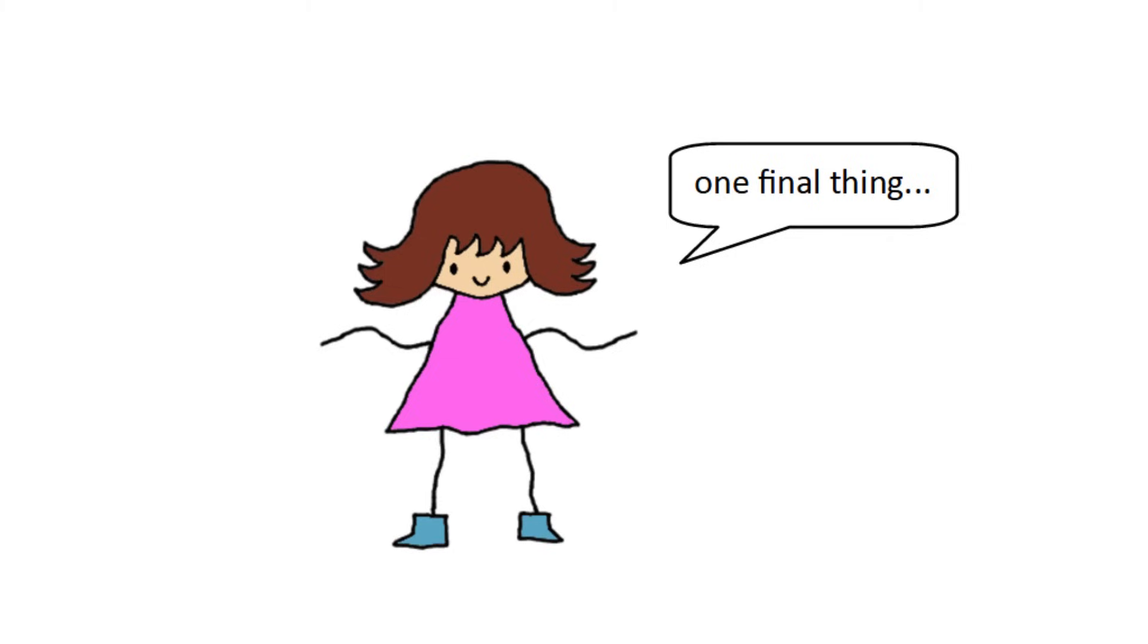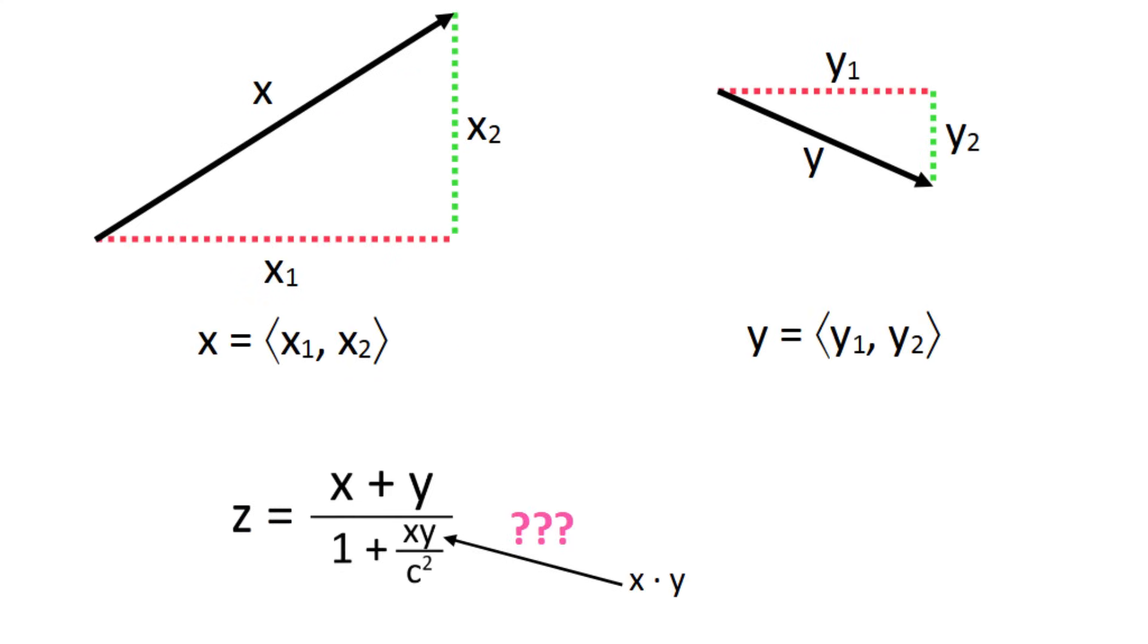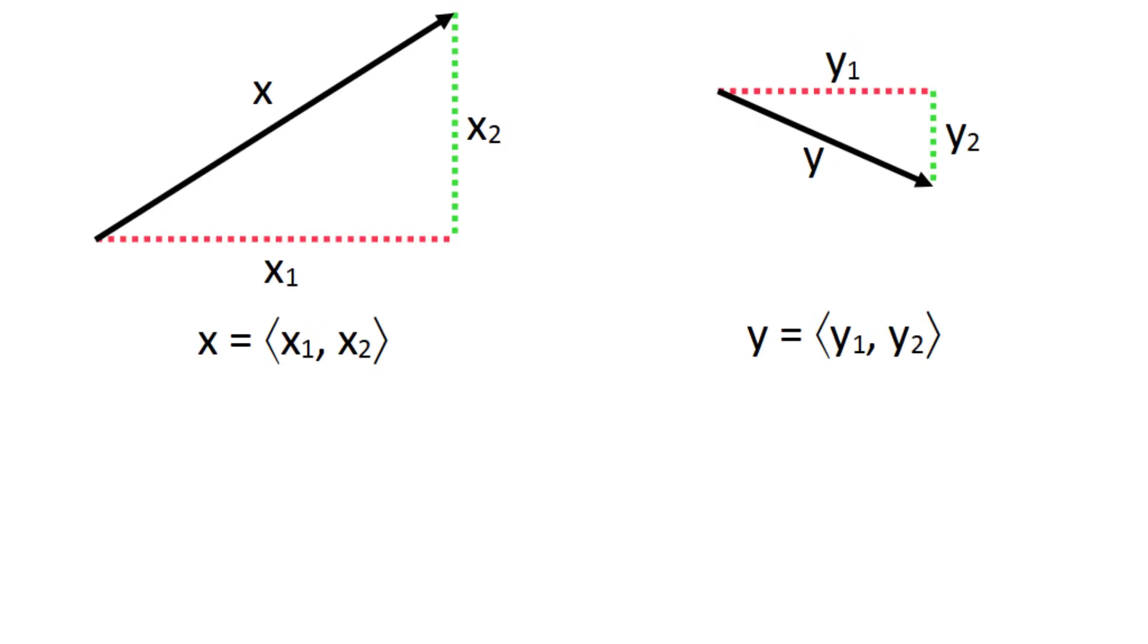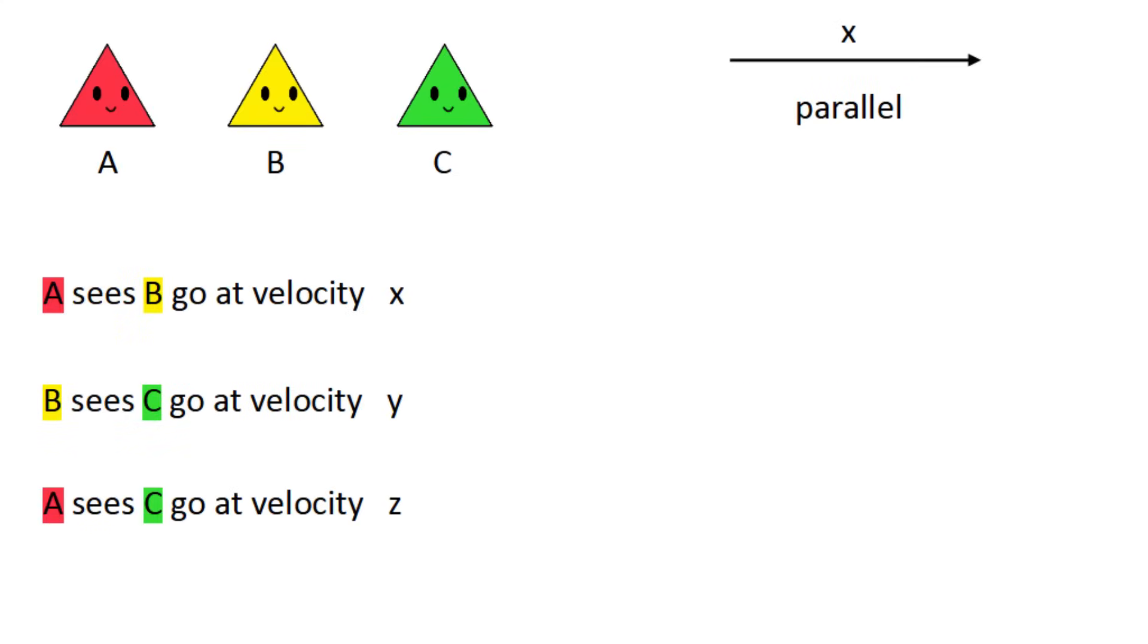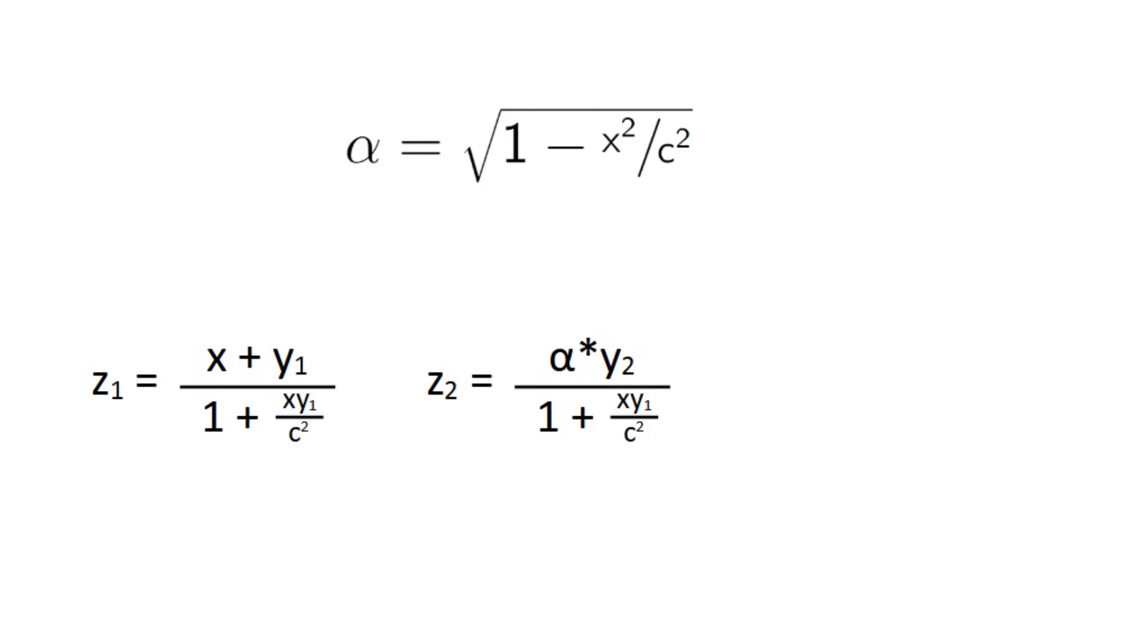And now there's one final thing I want to cover. With multiple spatial dimensions, velocities are represented by vectors with multiple components, and they might not be co-linear. It would be cool if the formula is still held just with vector addition and a dot product, but the actual formula is way more complicated and not even commutative. But there is a simpler form of it that we can use under certain conditions. Basically, you have to set up your coordinates in such a way that x only points in a single dimension, which we'll call the parallel direction. In that case, y can point in any direction and has parallel and perpendicular components y1 and y2 respectively. And the same thing applies to z. As you might expect, the formula for z1 in terms of x and y1 is just a short formula, but with only the parallel components. But for the perpendicular component, you have to take y2, multiply by alpha, and then divide by the same denominator as the parallel component. And for three dimensions, you just have another perpendicular dimension that works the same way. You can actually derive this formula with a setup similar to what we did before.